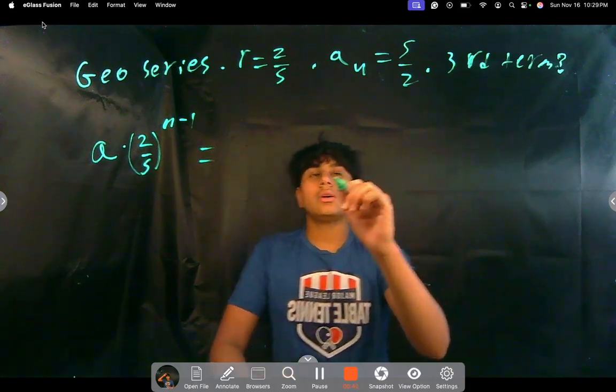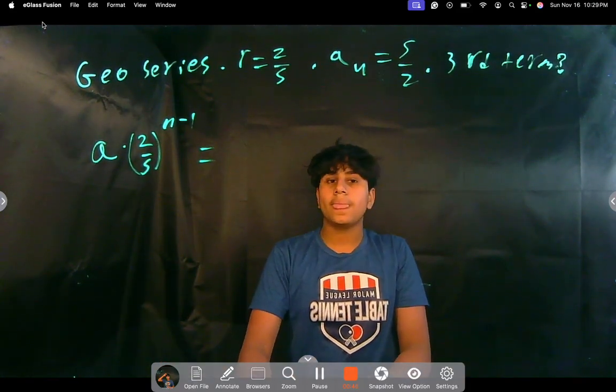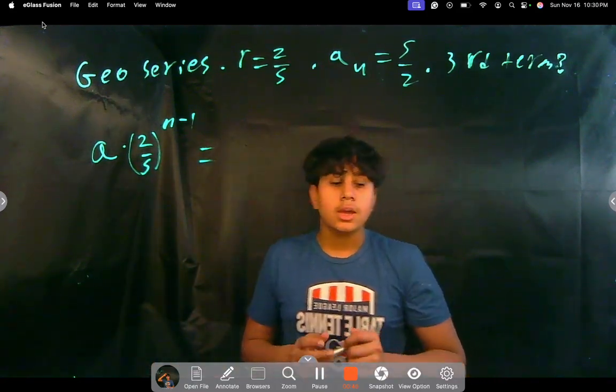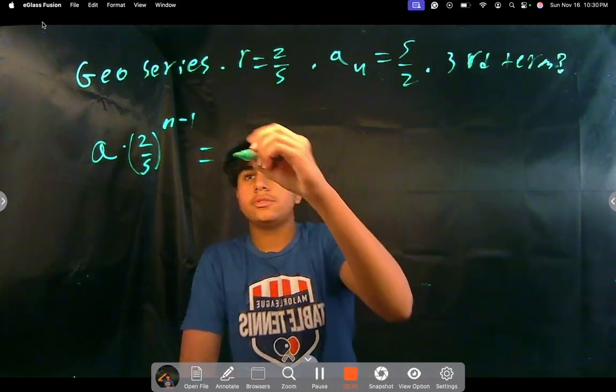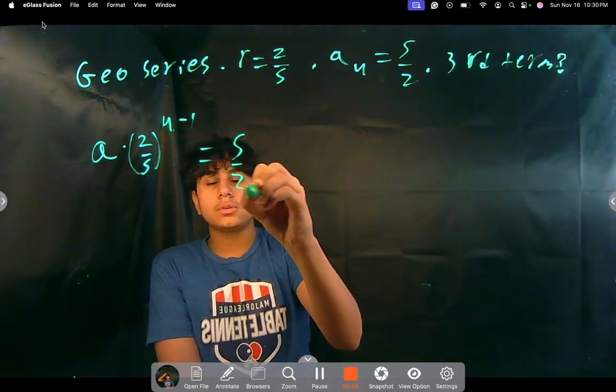Well, in this case, we know we can implement these values to find the general sequence so that we can find the third term after that. So if we want to find the fourth term, we just input n as 4. So put n as 4, and that's equal to 5 halves.